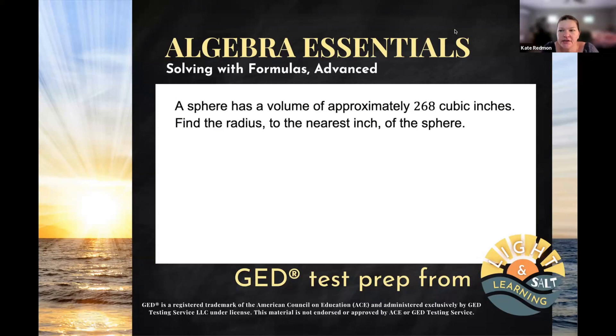Hello, algebra students. Let's take a look at this challenging example of utilizing that formula sheet to solve. A sphere has a volume of approximately 268 cubic inches. Find the radius to the nearest inch of the sphere. So what are they asking us to do or to find? They'd like us to find the radius. And you might say, Kate, well, there's no radius formula on the formula sheet. I would agree with you there.